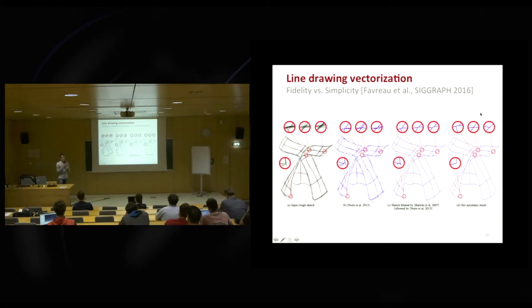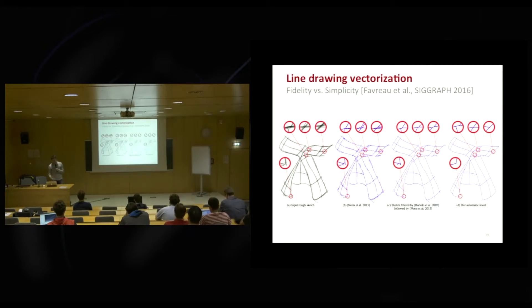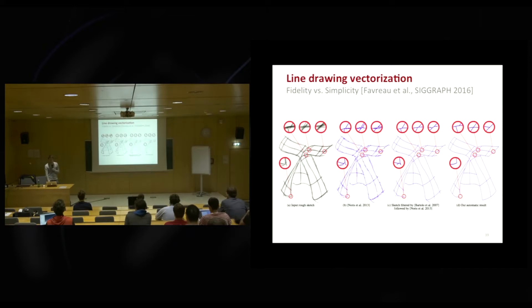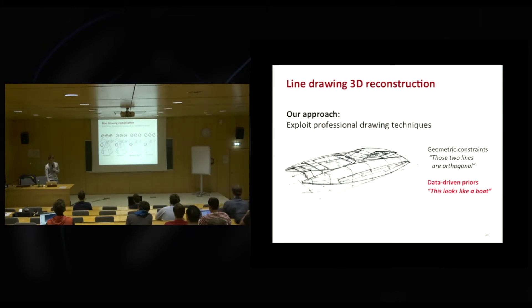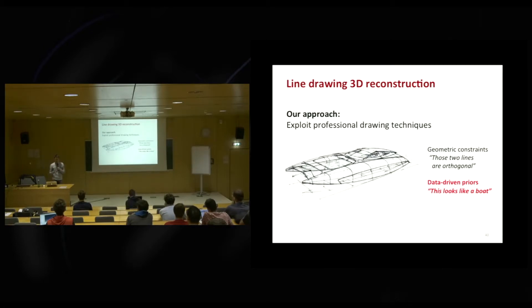An X-junction is easier to explain as two crossing curves than as four curves joining at a point. By forcing the algorithm to find a simple explanation we got slightly better results than prior work, but it's still ongoing work — we are not yet able to directly vectorize a drawing and process it to reconstruct in 3D. There's still a gap between what we can extract automatically and what we can process, and that's what motivated our follow-up work on data-driven methods, because with the progress of machine learning and deep learning, methods are now much more robust to ambiguity and noise.